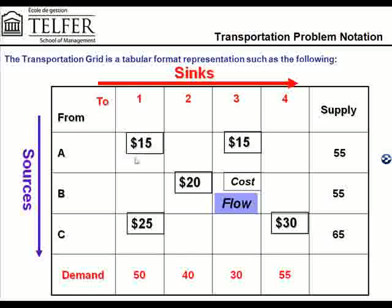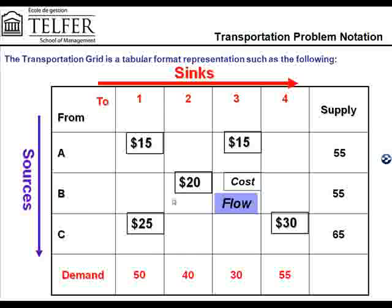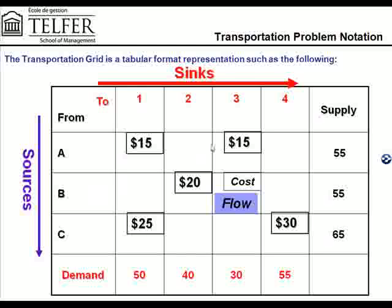Underneath the cost cell, you will have the flow associated with that supply and demand point. So it costs $15 per unit of transportation from supply point A to demand point 1. Similarly, it costs $20 per unit of transportation from supply point B to demand point 2. The flow, once you have determined how many items are going to be supplied, is shown underneath the cost cell within that overall cell between the supply point and the demand point.